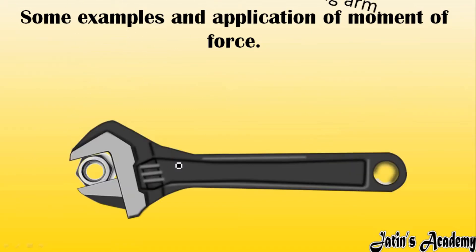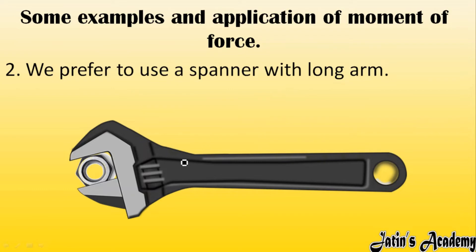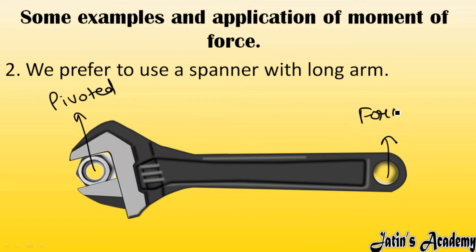We prefer to use a spanner with a long arm. Here the pivoted point is fixed, and from that point we apply force. The maximum possible distance between the point of application of force and the pivoted point means greater perpendicular distance, which means greater turning effect. That is why we always use long-arm spanners in order to rotate easily by applying less force.